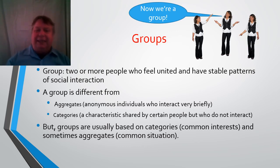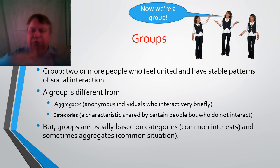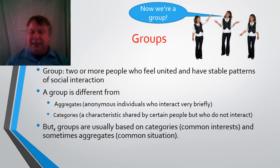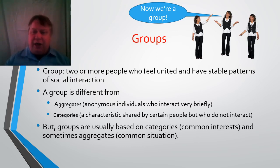A category is somewhat similar except it's based on a characteristic. For example, I'm white — that's a characteristic, so I'm in the category of white people. But I don't feel like I'm a member of a group with all other white people or that it has any significance for me. However, sometimes a shared characteristic can be the basis of group membership. Maybe you're at university and you're left-handed and you form a club of left-handed people because you all share the same problems and frustrations. It could be that you're disabled and share common frustrations with other disabled people. So a category can be the basis of a group based on common interests.